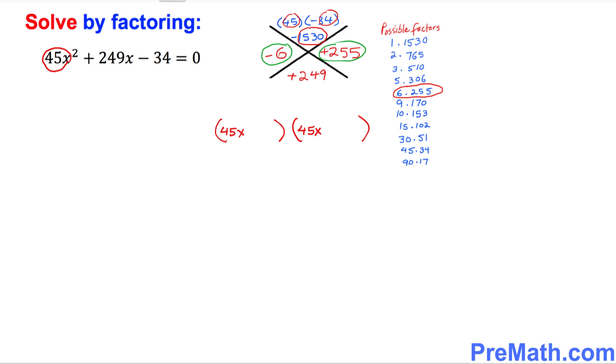Now the next step is I want you to look at these two factors that we figured out which is what? Negative 6. I want you to write down negative 6 right up here and I want you to write down this positive 255 right here.